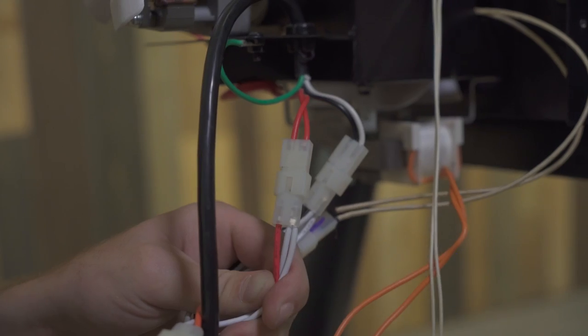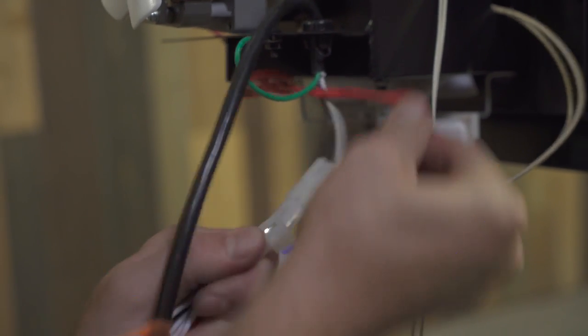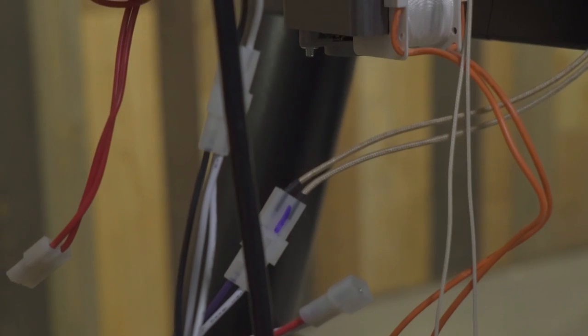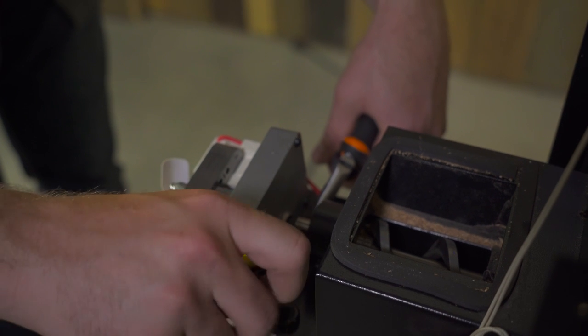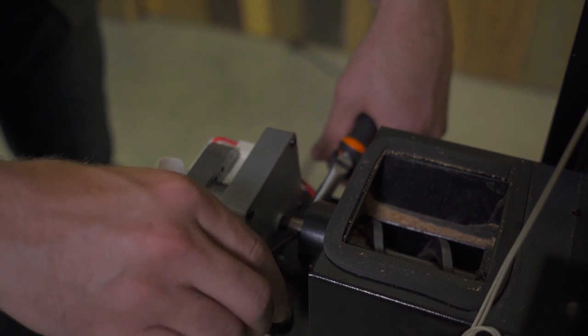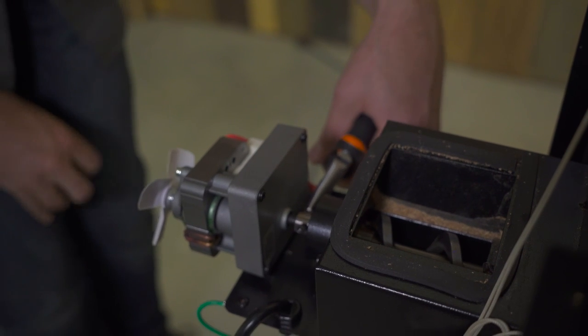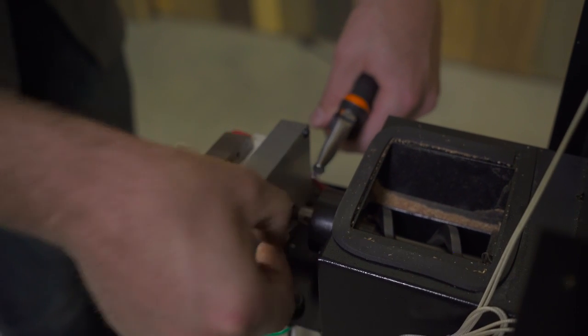Locate the red wiring. Those wires are connected to your auger motor and we're going to want to unplug the two connections there. On the back side of the auger motor, you should see a bolt that holds the motor onto the auger shaft. We'll need to remove this using an Allen wrench and a 5/16 wrench.